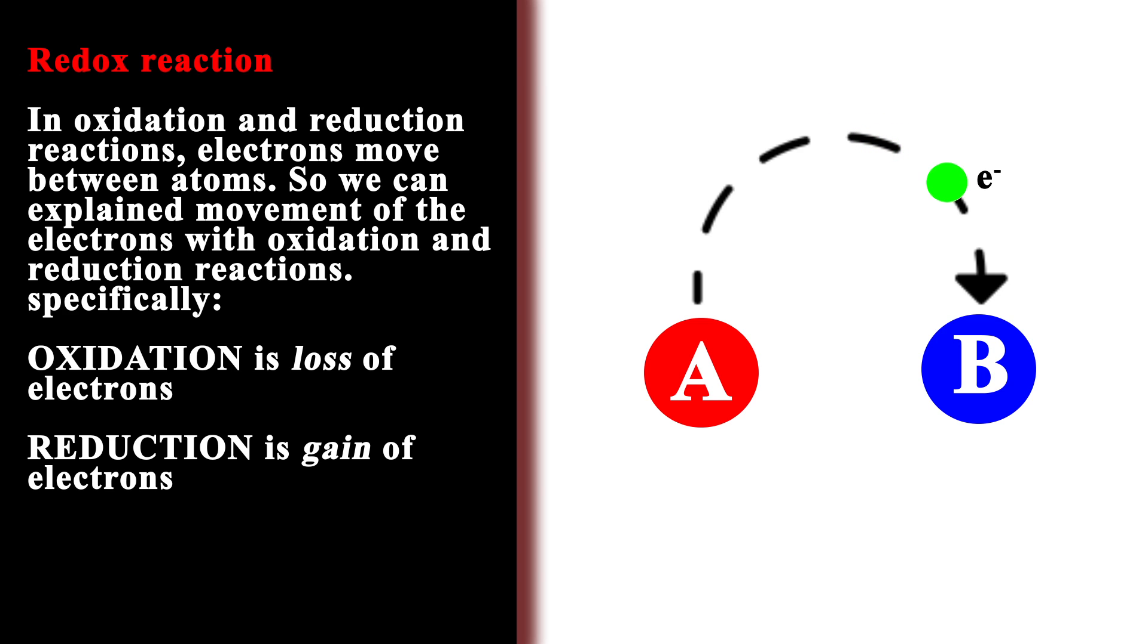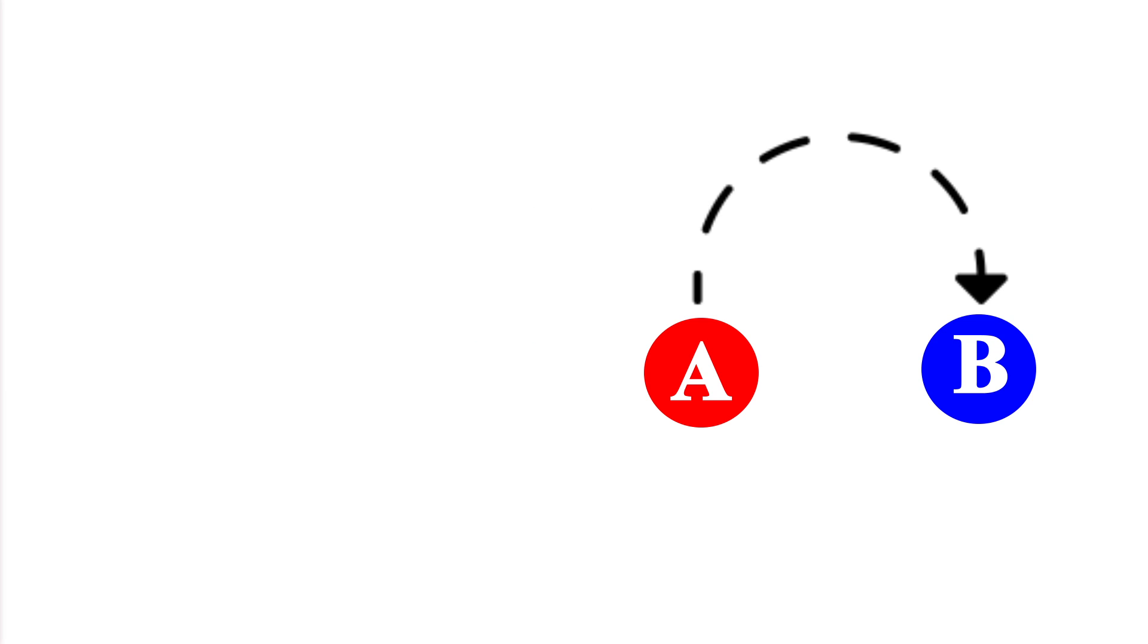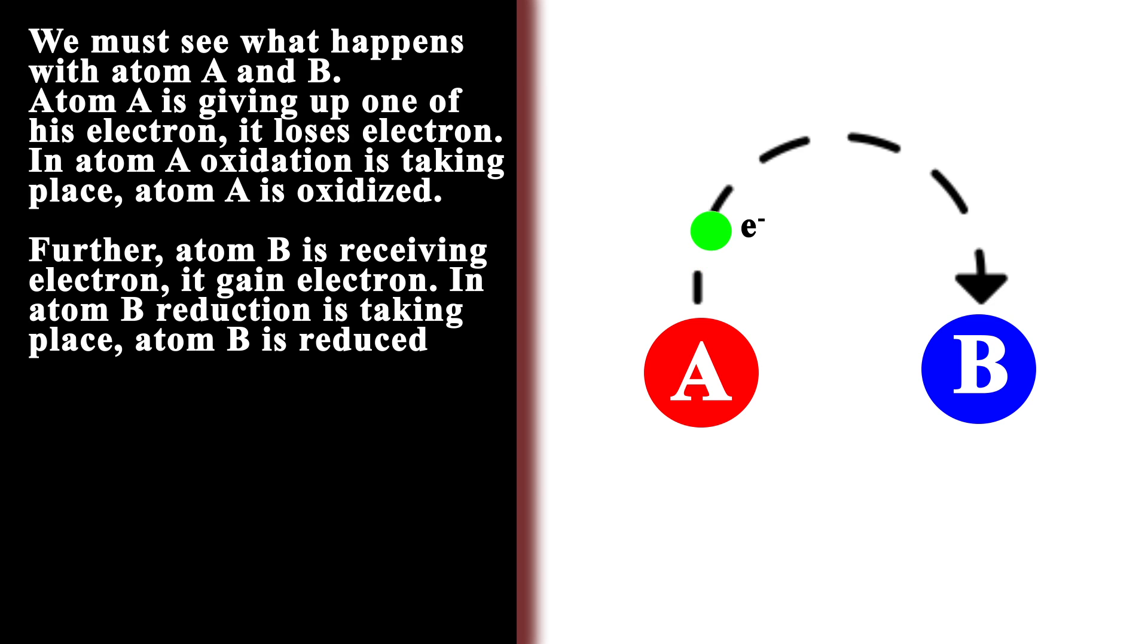Specifically, oxidation is loss of electrons; reduction is gain of electrons. We must see what happens with atoms A and B. Atom A is giving up one of its electrons—it loses an electron. In atom A, oxidation is taking place; atom A is oxidized. Atom B is receiving an electron.